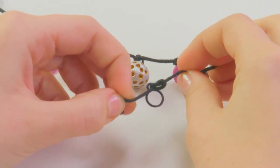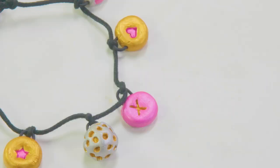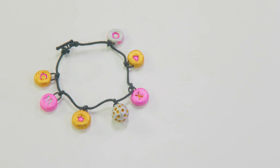Double knot a clasp at one end of the bracelet and stick toggle at the other. Trim any excess cord, and now you're ready to show off your trendy bracelet. How cool is that?